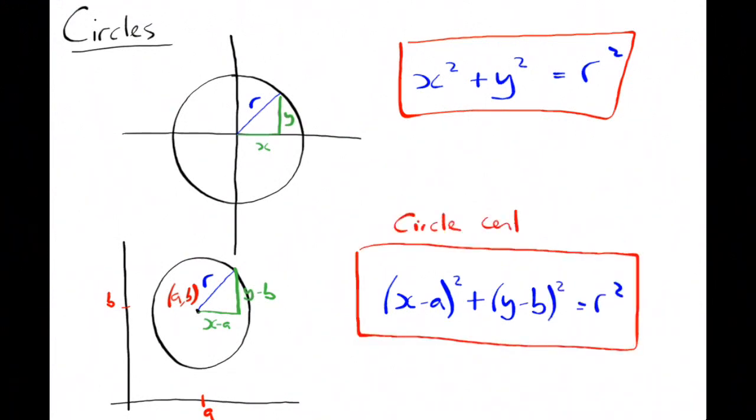So that's for a circle centre ab radius r and the other one was for a circle centre of the origin radius r. We'll have a look at some examples.